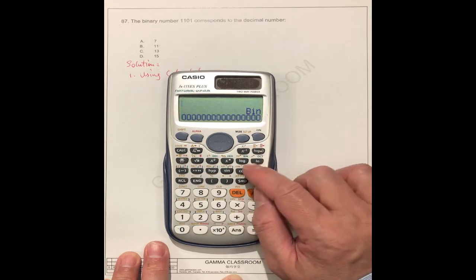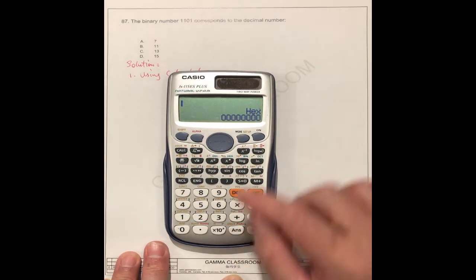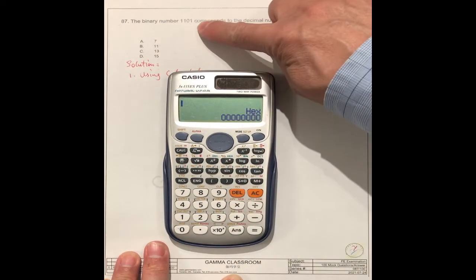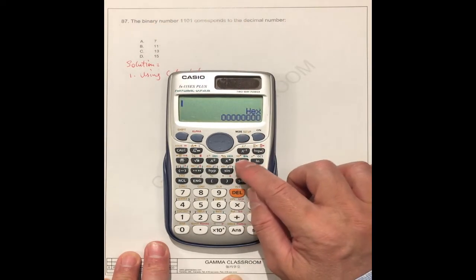You can choose bin, binary, octal, or hexadecimal. It doesn't matter. Anything. If for this question, you have the, you know the binary number. You choose the binary here.